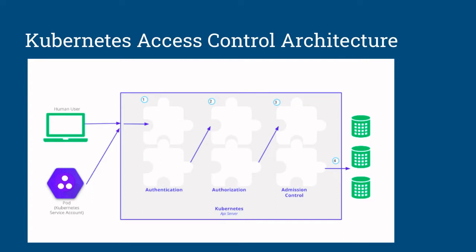As you can see, the end users — like human users — and the service pods, basically the containers running within a pod within the cluster, if they need access to the Kubernetes API server or other resources of the cluster, they need to request it via the Kubernetes API server. Once the HTTPS TLS connection is established with the API server, the request is routed through three modules: the authentication module, the authorization module, and the admission control module.